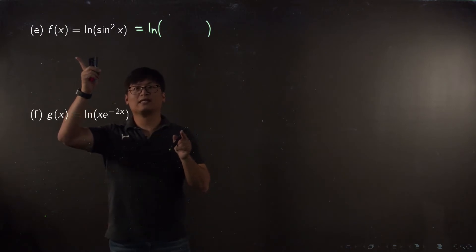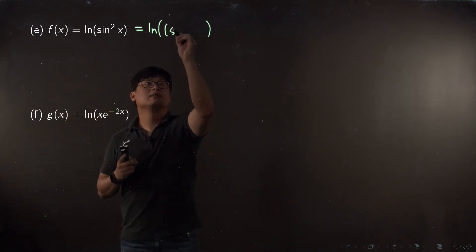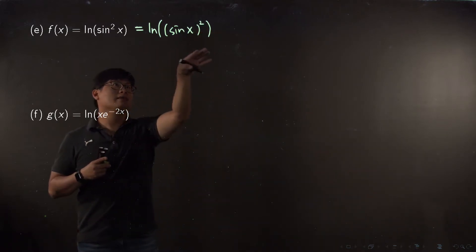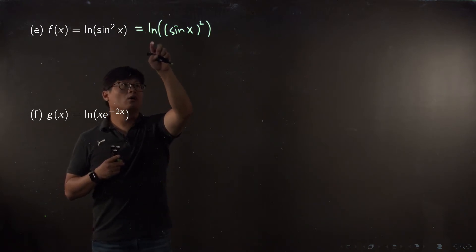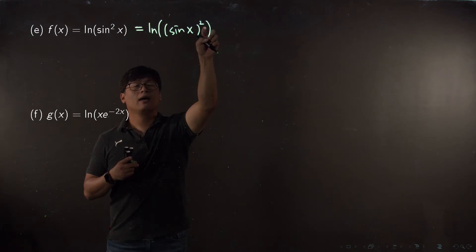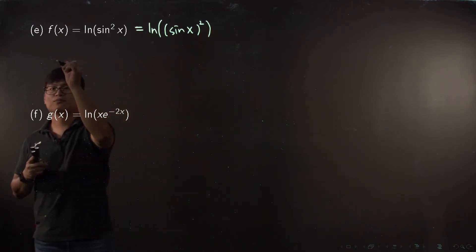As you remember, for trig functions we use notation like sine squared x. What does that mean? Sine squared x means sine x squared. Can you realize the layers? Outside function is log, your jacket function. T-shirt function is squared, and your underwear function is sine x.